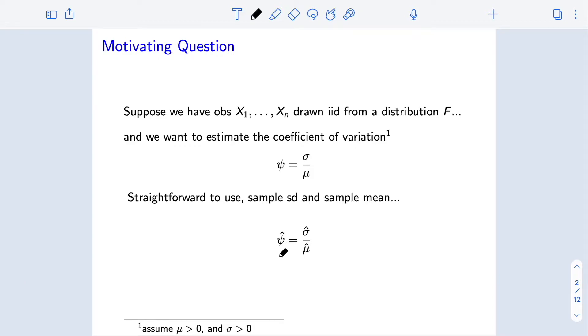We're going to use the estimator that we had mentioned before, psi hat, which is just the sample standard deviation divided by the sample mean. This is a plug-in estimator that combines two simpler estimators sigma hat and mu hat. In particular, it's going to be important that sigma hat and mu hat are asymptotically linear estimators of sigma and mu.